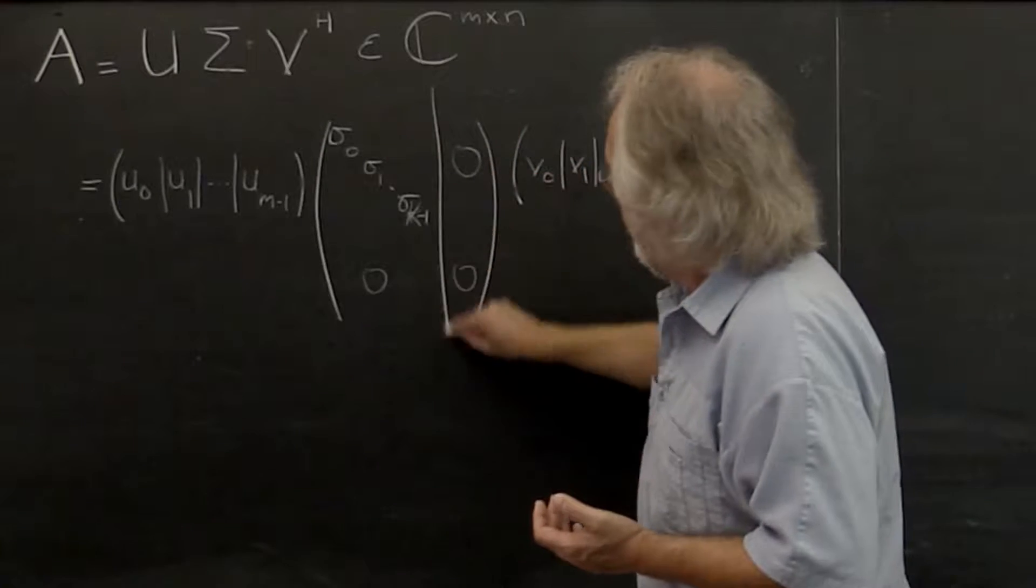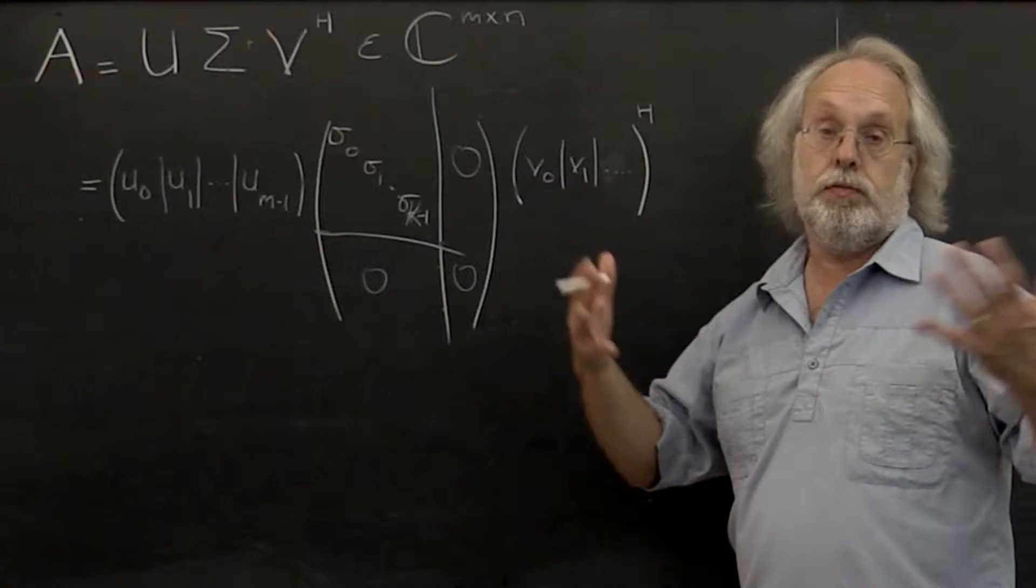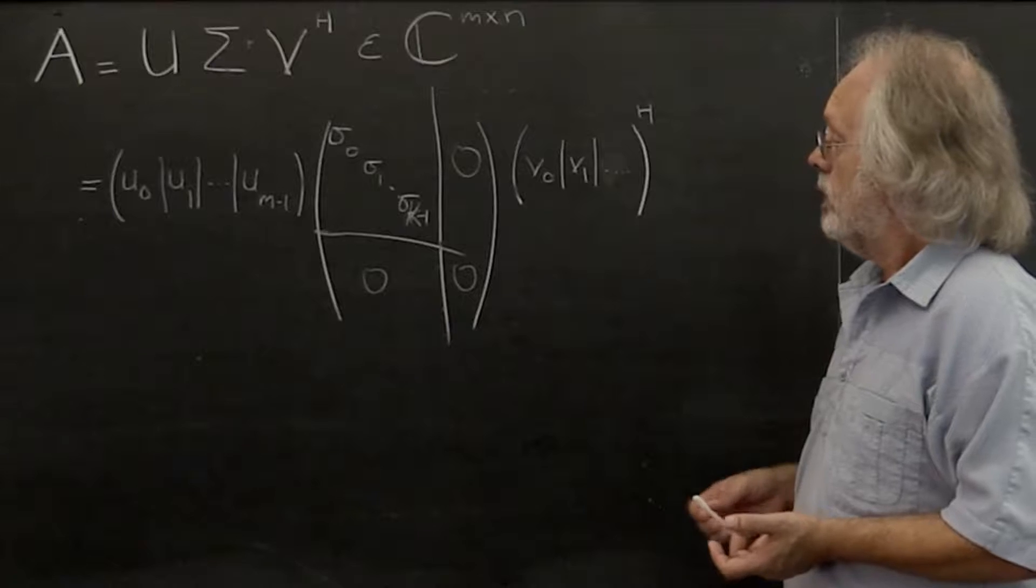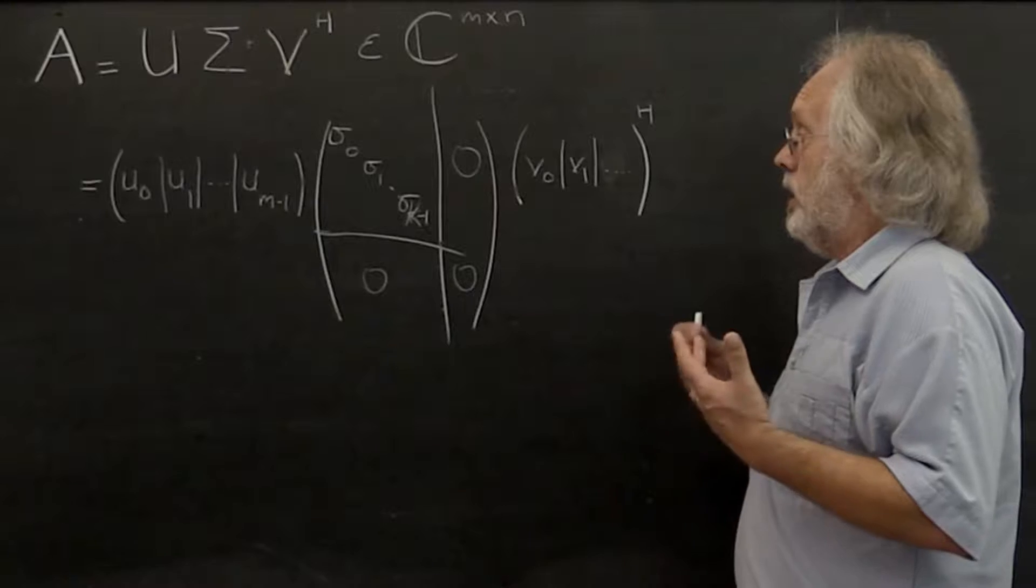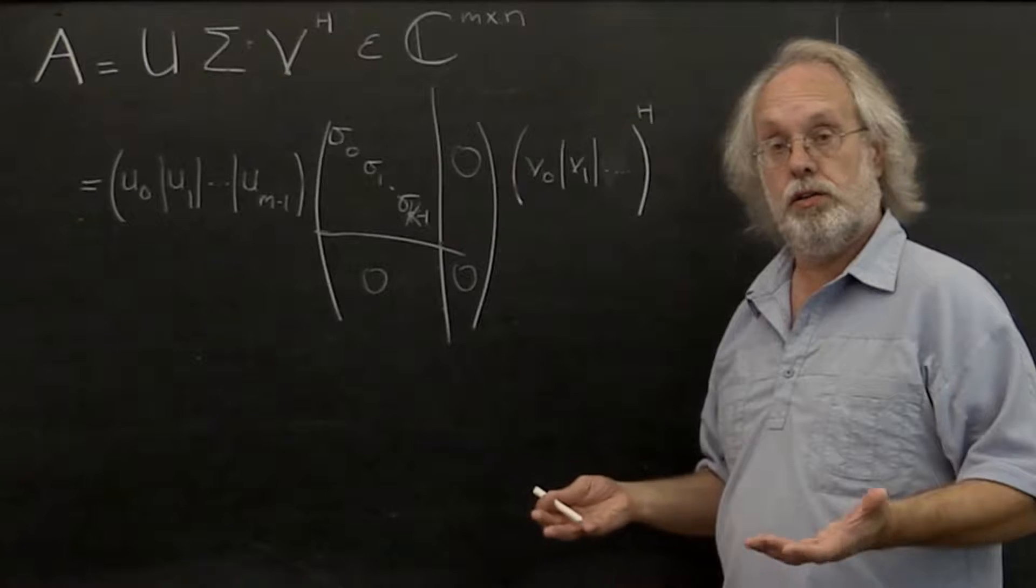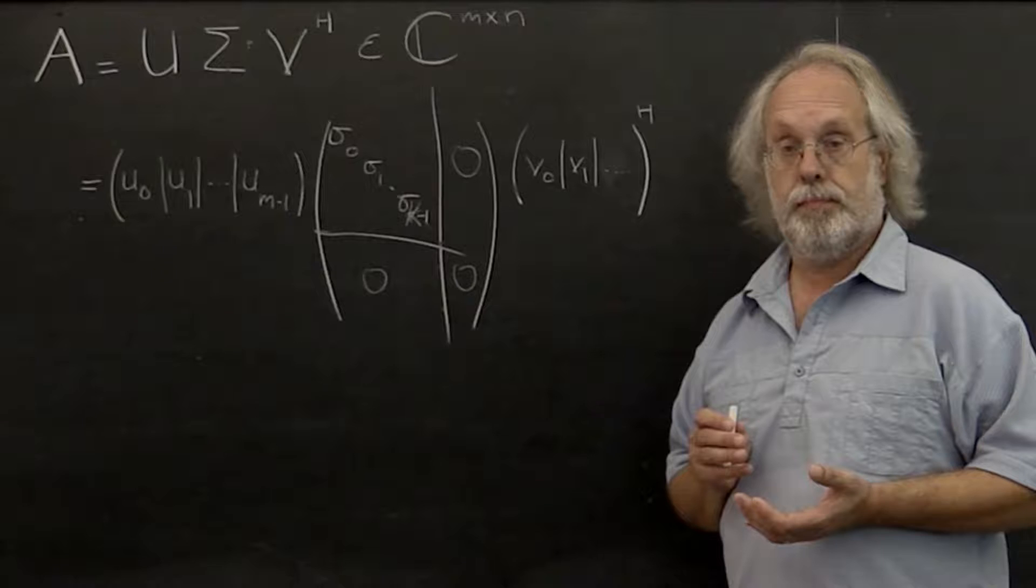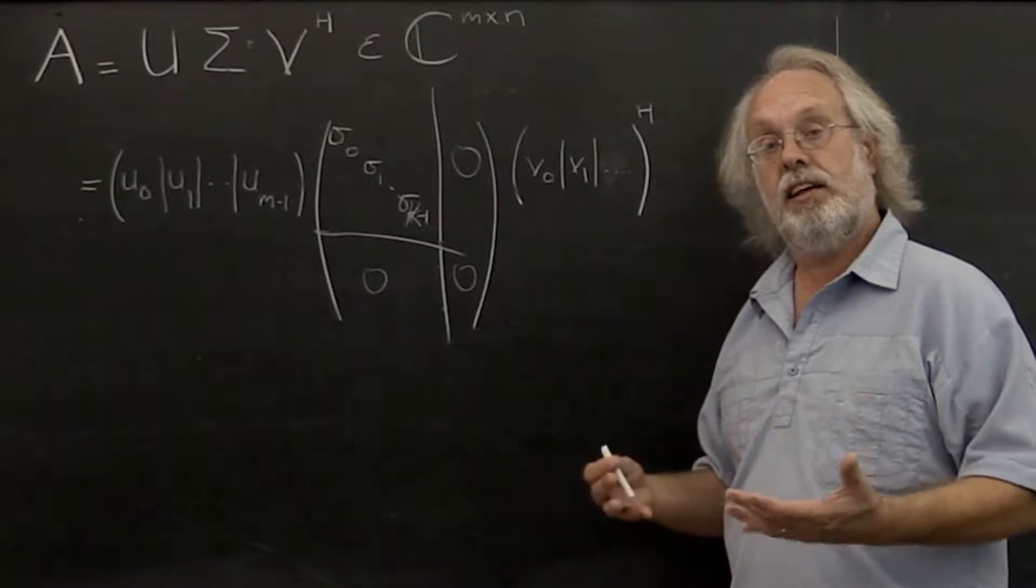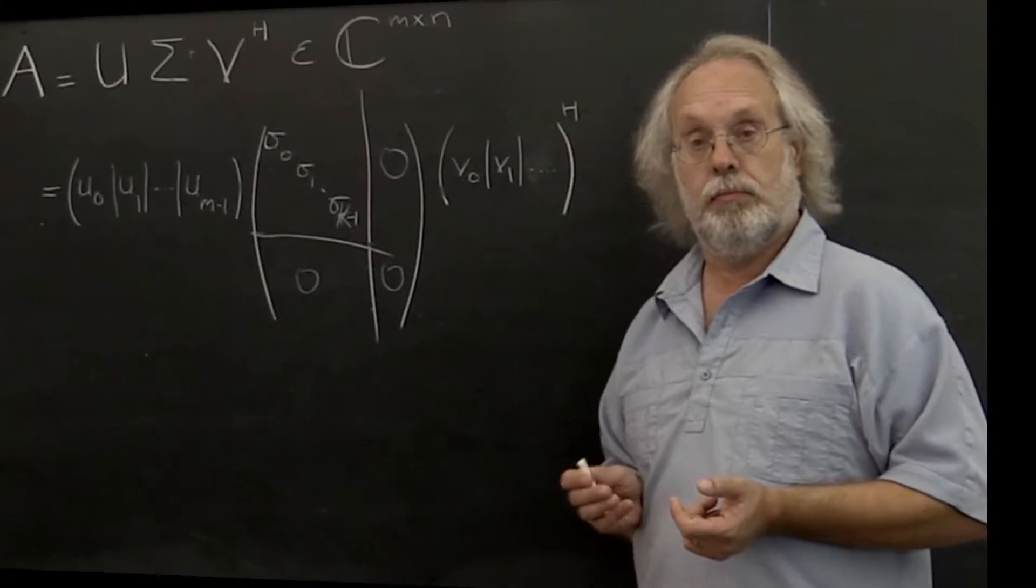Then if you set all of these to zero because, for example, you believe them to be small enough that they should be treated as zero, the resulting matrix is the rank k matrix that in the two-norm or the Frobenius norm is closest to matrix A. So now we have a way of detecting the rank of a matrix or the effective rank of a matrix.